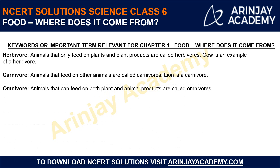Omnivorous animals feed on both plants and animals. An example is the crow — crows feed on dead bodies, making them scavengers, but they can also eat plant-based food. So crow is an example of an omnivorous animal.